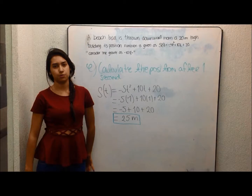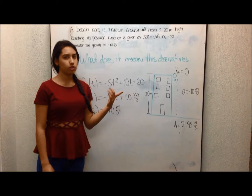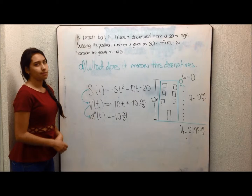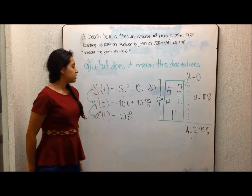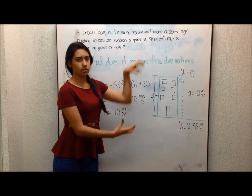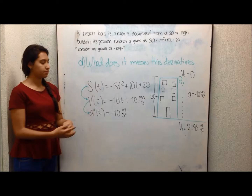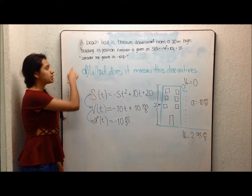The original derivative is the position function. Taking its derivative gives us the velocity function: -10t + 10 meters per second — that is the velocity at which the ball is falling. Taking the derivative again gives us the acceleration: -10 meters per second squared, which is the same value given as gravity in the problem.